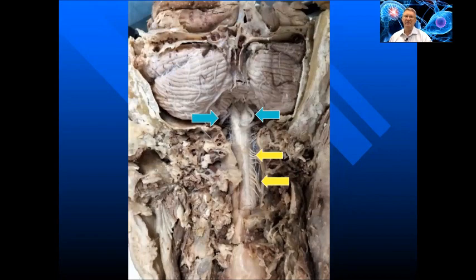If we go back to the high cervical spine, at the turquoise arrows you can see the vertebral arteries. There is some evidence that malalignment of the high cervical spine at the cranio-cervical junction can compromise vertebral artery function. And at the yellow arrows, we can see the emerging nerve roots.